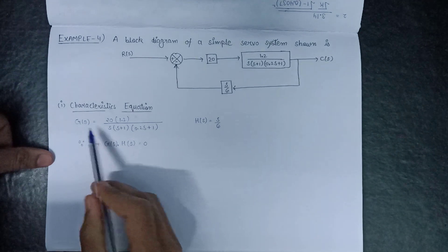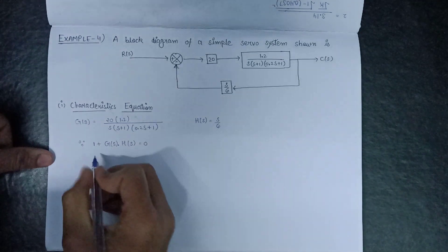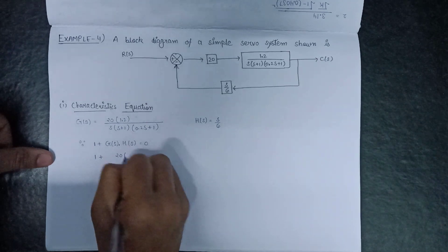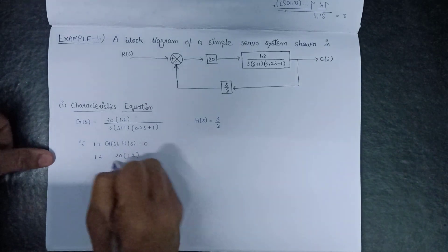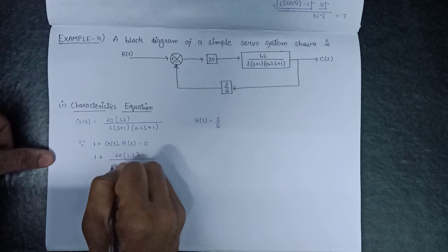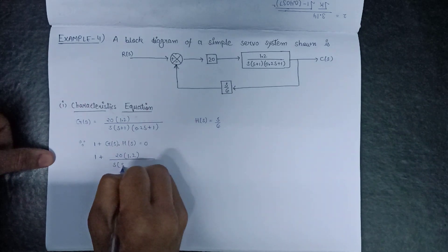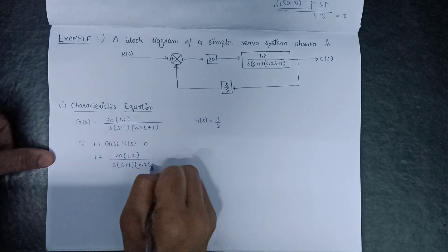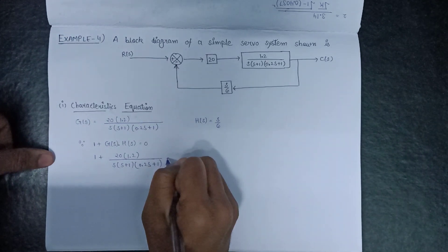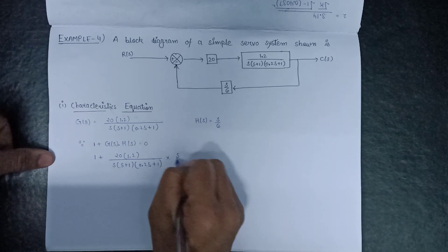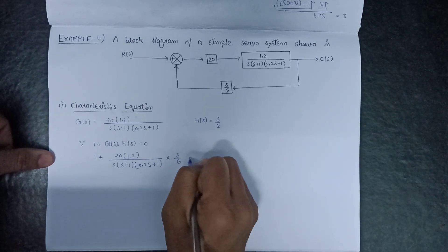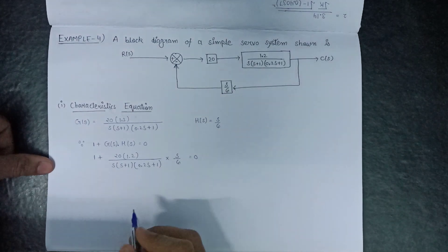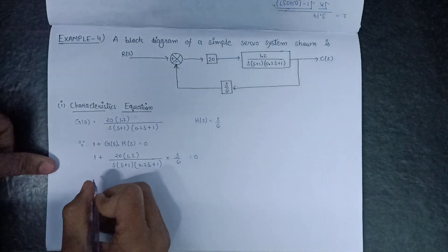On substituting the values of G and H, we get: 1 + [20 × 1.2 / (s(s+1)(0.2s+1))] × (s/6) = 0. On taking the LCM, we simplify the expression.